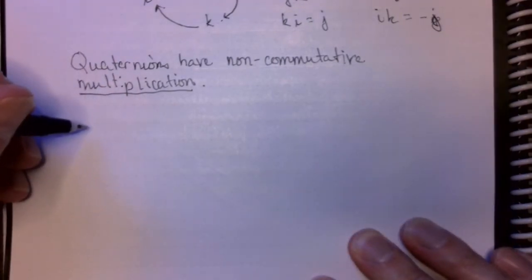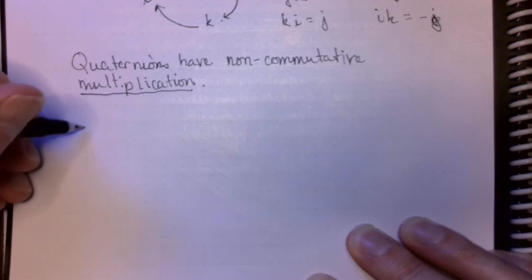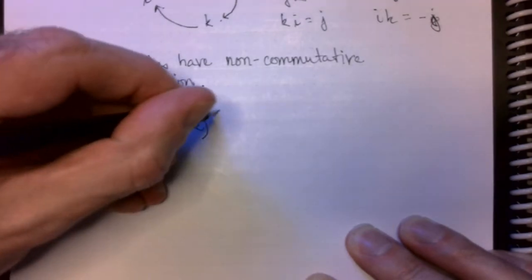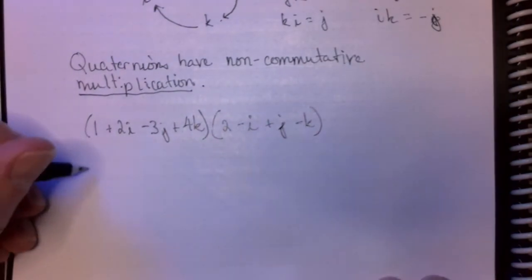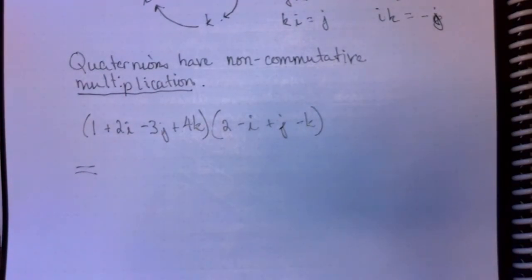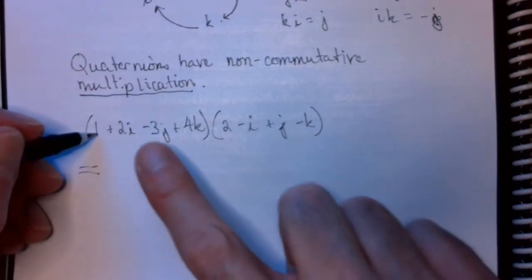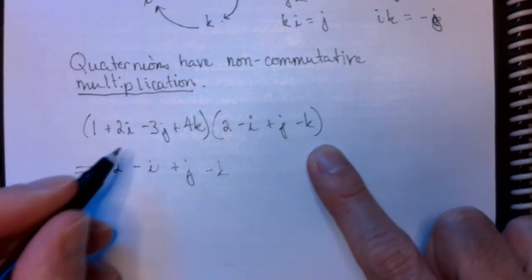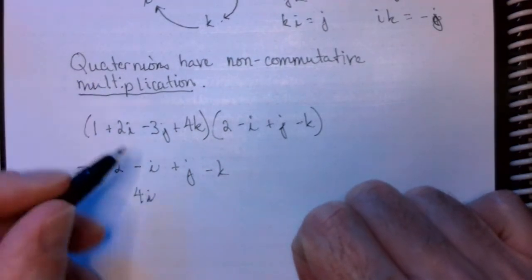So, when we are multiplying quaternions, we just need to know this little diagram right here. And let's take two quick examples. We'll do (1 + 2i - 3j + 4k) and we'll multiply that by (2 - i + j - k). Now, all we need to do here is distribute and combine like terms. First thing I'm going to do is distribute through the one. I'll take this one and distribute it through the second factor. So, that'll just give me 2 - i + j - k.